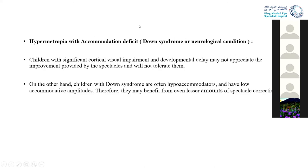In special conditions such as patients with visual impairment and developmental delay, they may not appreciate the improvement provided by spectacles and will not tolerate them. On the other hand, patients with Down syndrome are usually hyperaccommodators and have low accommodative amplitude; they will get more benefit from a lesser amount of spectacle correction.